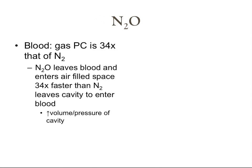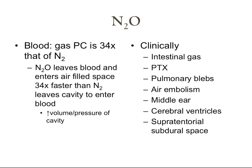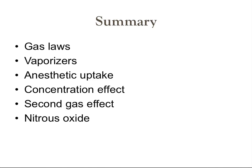Lastly, we'll talk about nitrous oxide. The blood-gas partition coefficient of nitrous oxide is 34 times that of nitrogen, so when nitrous oxide enters an air-filled space, it does so 34 times faster than nitrogen leaves the cavity to enter the blood, leading to either an increase in volume or pressure depending on the nature of the cavity. Be cautious with or possibly avoid nitrous oxide in instances of intestinal gas, pneumothorax, pulmonary blebs, potential air embolism, middle ear operations, cerebral ventricles, and the supratentorial subdural space. We went through gas laws, vaporizers, anesthetic uptake, the concentration effect, the second gas effect, and nitrous oxide.